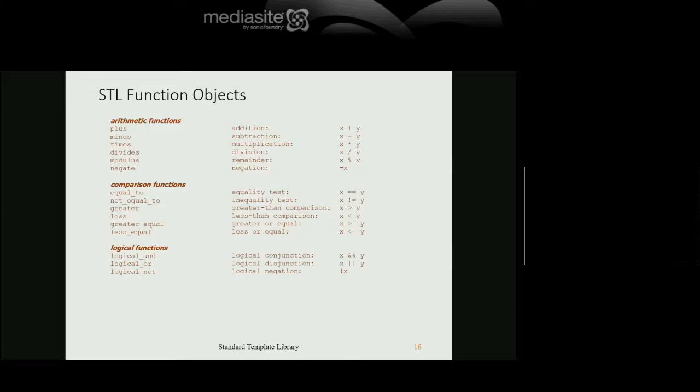The STL provides a whole bunch of pre-built function objects: arithmetic functions, comparison functions, and logical functions. The model is that a lot of this basic stuff can be done using STL algorithms and function objects. There are also many types of algorithms — compare, copy, copy_backward, heap operations, initialization, merge, min, max, permutations, remove, scanning, search, set operations, sorting, swap, and transformations.